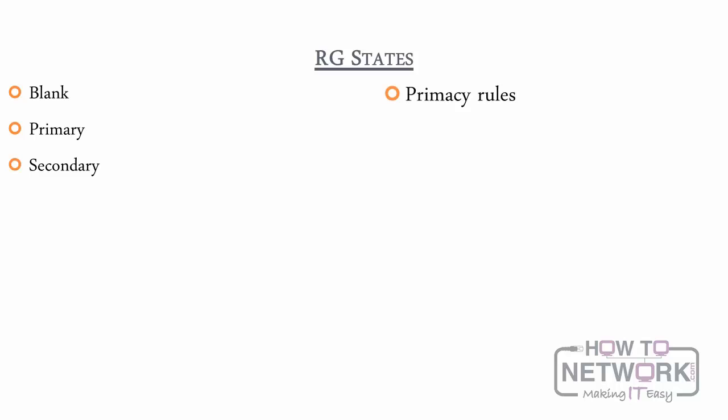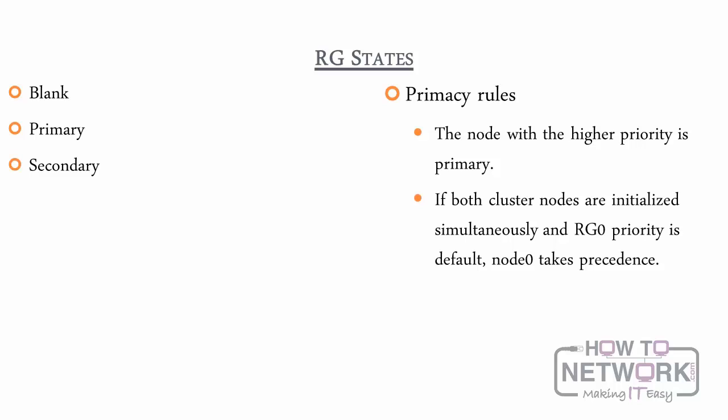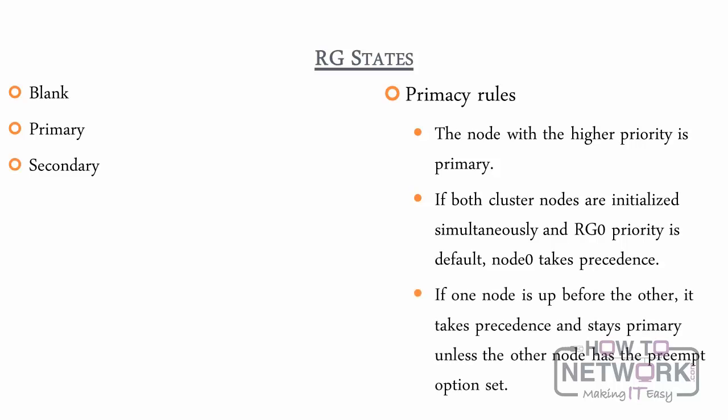Primacy rules: the node with the higher priority is primary. By default, both nodes have the same priority for RG0, but this can be changed. RGX priorities must be specified. If both cluster nodes are initialized simultaneously, the RG0 priority is default and node 0 takes precedence. If one node is up before the other, it takes precedence and stays primary unless the other node has a preempt option set. Preempt is not supported on RG0.